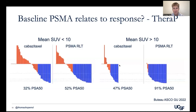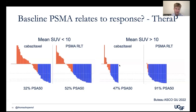In terms of how baseline PSMA uptake relates to response, there are some prospectively defined endpoint analyses from the TheraP trial. They took an SUV mean measured on the baseline PSMA PET. If you had an SUV mean over 10, you had a 91% chance of a PSA-50 response. If your SUV mean was less than 10, it fell by nearly 50% — you only had a 52% chance of a PSA-50 response. So that uptake is very predictive of how you're going to do in response to this therapy.